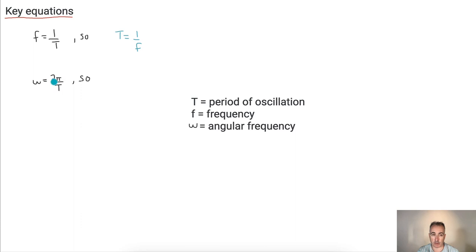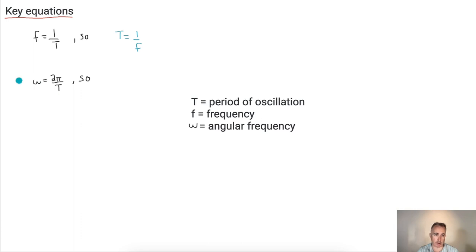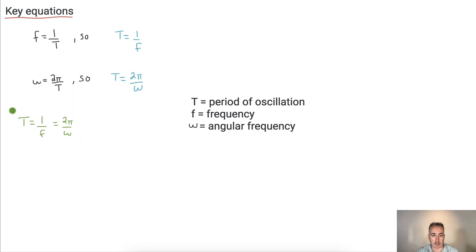We also have omega equals two pi over T. Angular frequency is like a frequency but instead of one over T it's two pi over T — because a whole circle is two pi radians. Rearranging gives T equals two pi over omega. Combining these: T equals one over f, which also equals two pi over omega. This is in your data booklet. You can use whichever form you need depending on what variables you know.